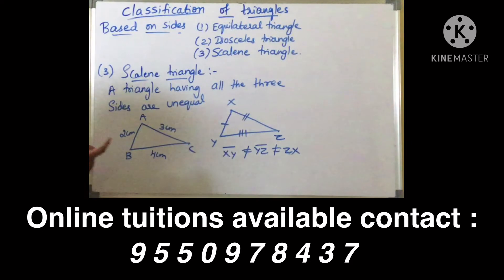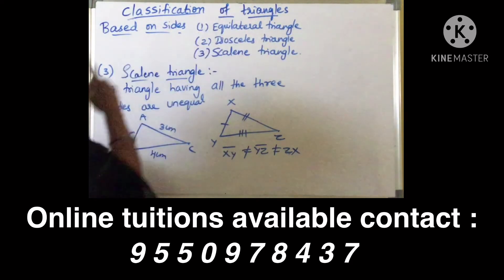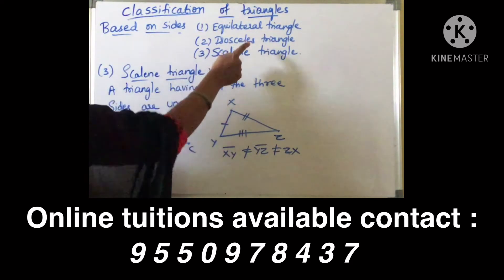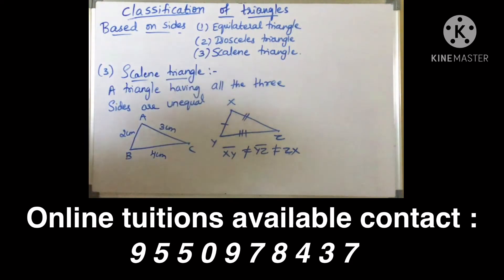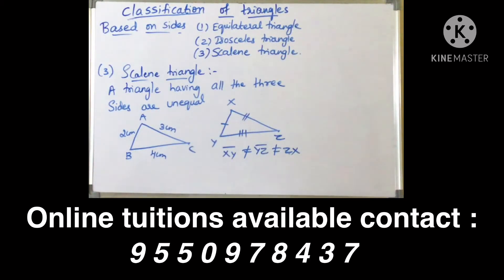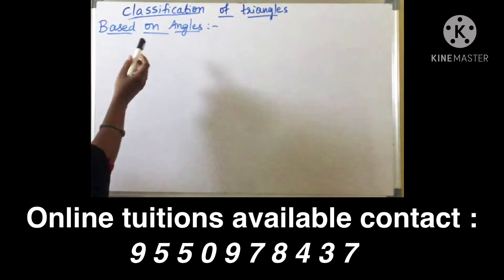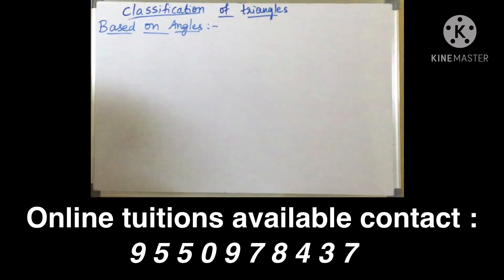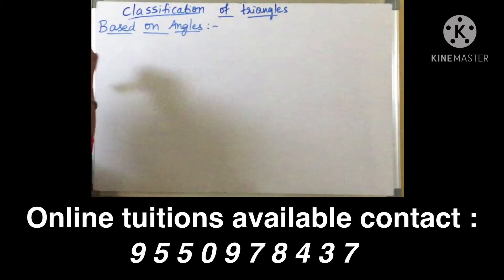It is very easy to remember: in an equilateral triangle, all three sides are equal; in an isosceles triangle, only two sides are equal; in a scalene triangle, no sides are equal. Next, we are going to discuss triangles based on angles. Based on angles also, triangles are again of three types.